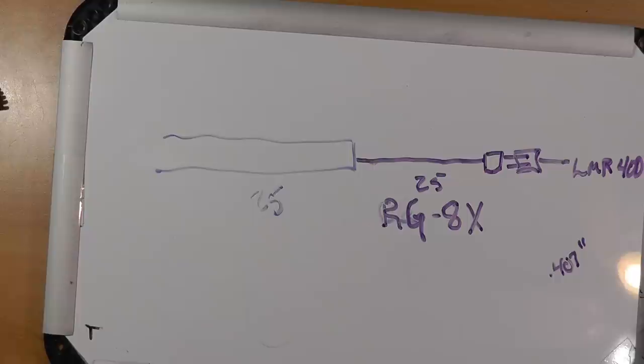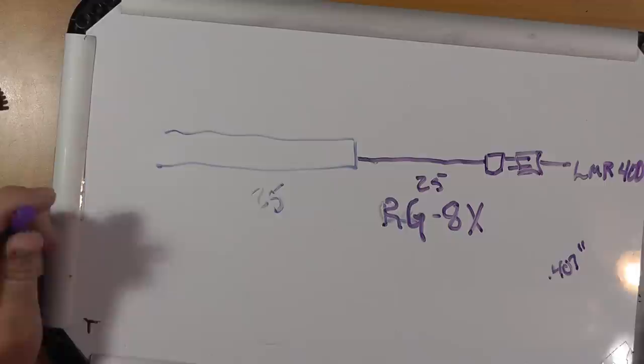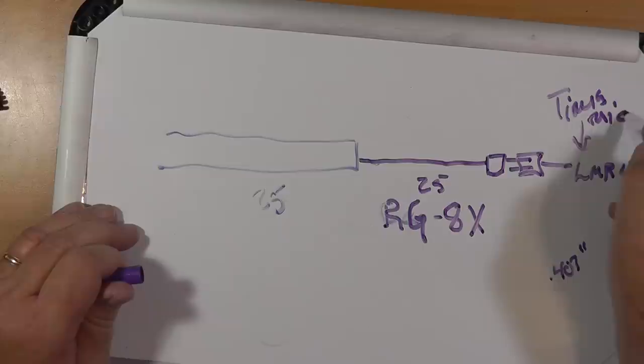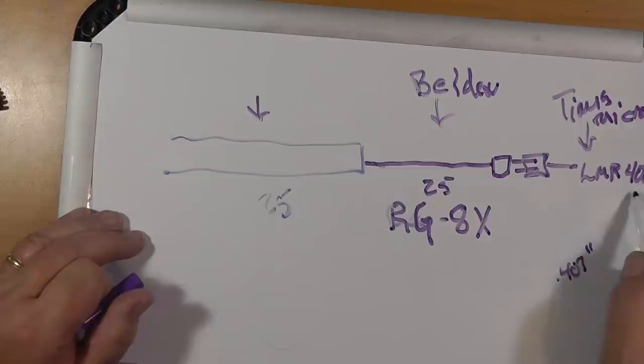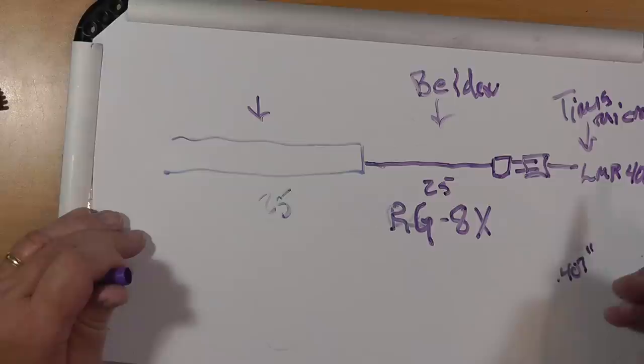LMR 400 is what I would consider the maximum size cable that you would use. I've got a reel of it out here and I've got some special connectors that I got from Times Microwave. This right here from Belden and heaven knows who makes this. You can get LMR 600, 800 and so on which is thicker, thicker, thicker and substantially more expensive as you go.